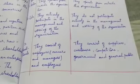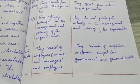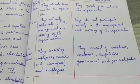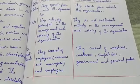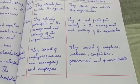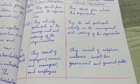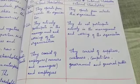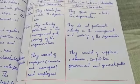And the third point of differentiation is constituents. Internal stakeholders consist of employers, owners, managers and employees. Under external stakeholders, they consist of suppliers, customers, competitors, government and general public.